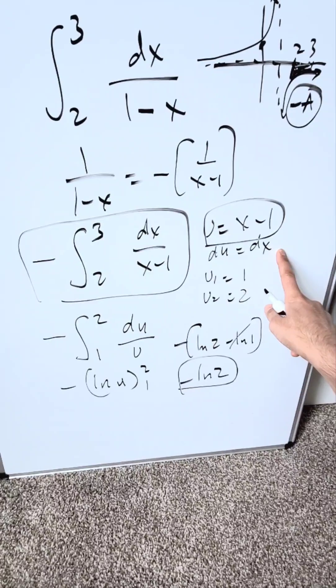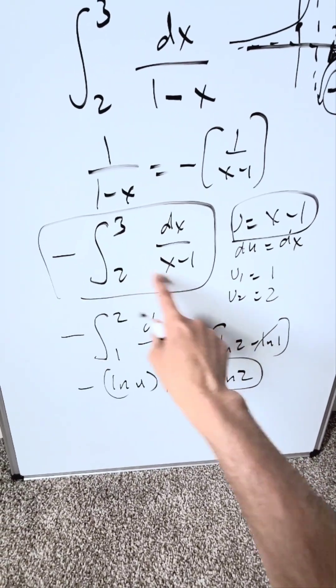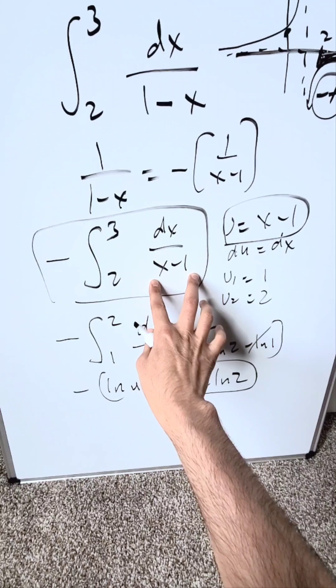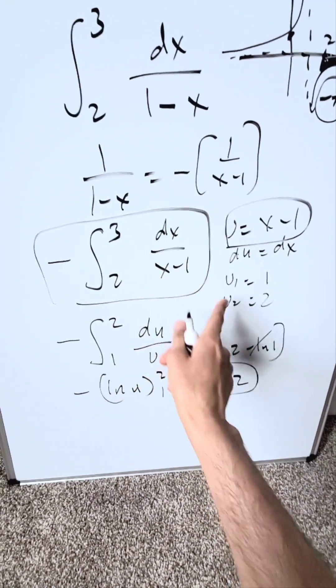Again, this right here can be superfluous. You could have taken this directly to a minus natural log parentheses x minus 1, then put 3 and 2, and you would still have the same result.